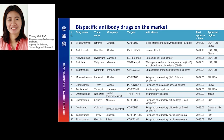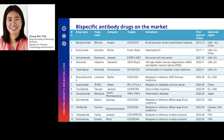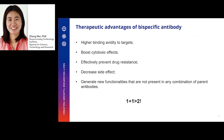Currently, there are 13 BsAb drugs available on the market, and 10 of them were approved in the past two years alone. Due to its unique dual targeting capability, BsAb can potentially provide huge therapeutic advantages over traditional monoclonal antibodies.